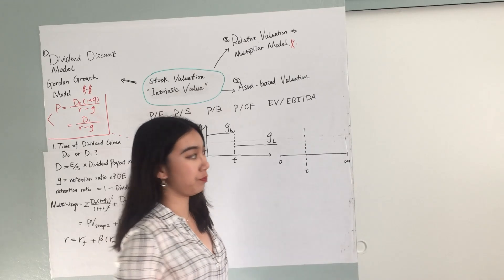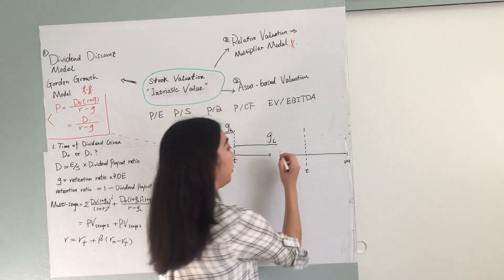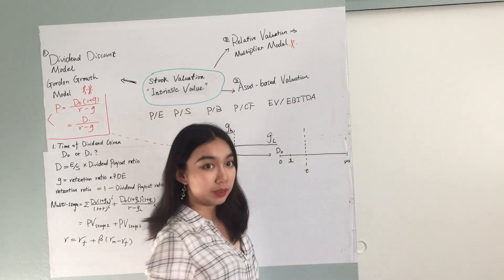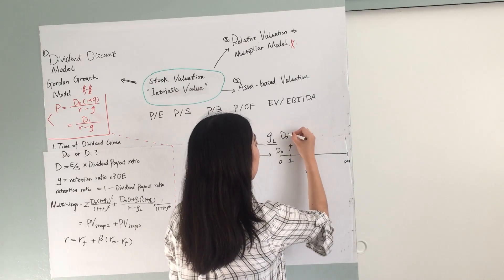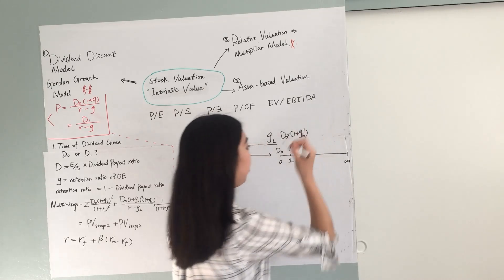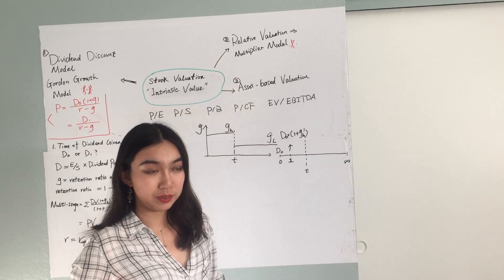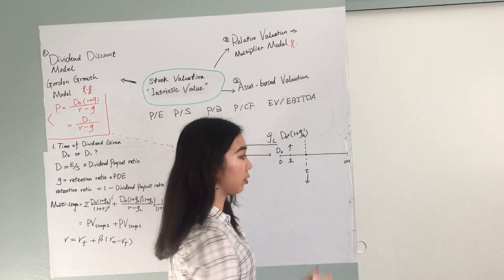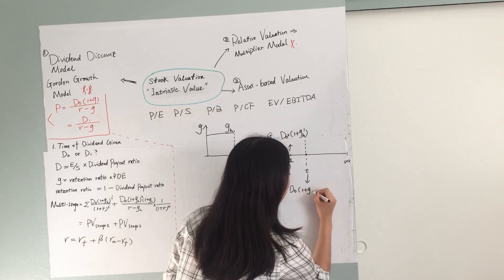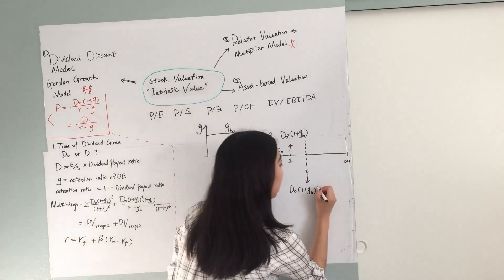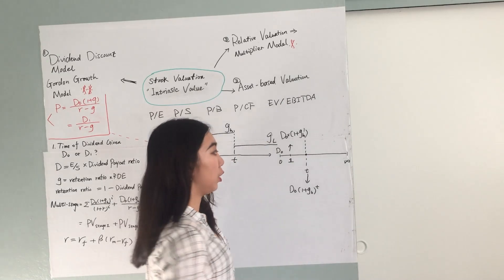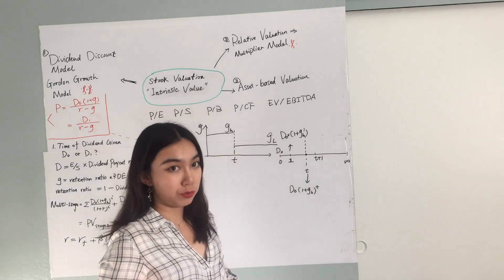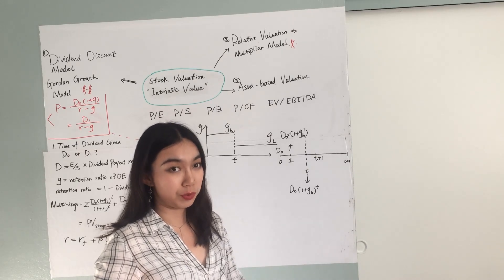So what will the cash flows be? At T equals 0, the dividend is D0. When T equals 1, the dividend becomes D0 times (1 plus GH). This continues until T equals T, when the growth rate changes from GH to the relatively lower rate GL.